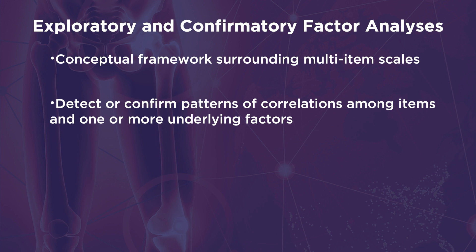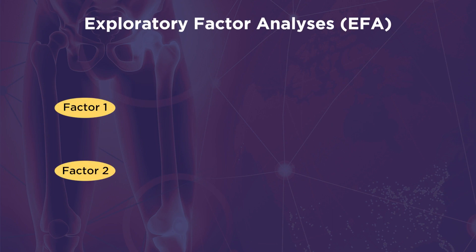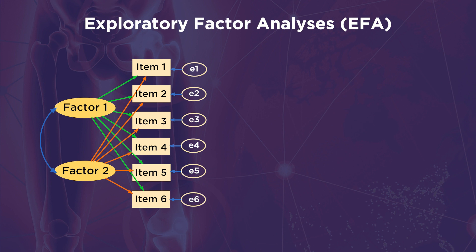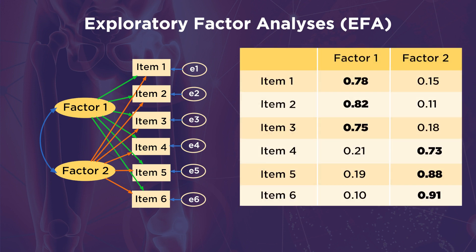The conceptual framework surrounding multi-item scales is investigated by factor analysis. Factor analysis detects or confirms patterns of correlations among items and one or more underlying factors. A factor is a latent or unobserved variable. The term factor is used interchangeably with domain, construct, or concept. The factor is measured with observed variables such as questionnaire items. We conduct exploratory factor analysis, or EFA, when we don't have a prior theory about which items measure which factors, except the number of factors. In EFA, the factor loadings are freely estimated between all factors and items. In the table, we can see that item 1, item 2, and item 3 are mostly measuring factor 1, whereas item 4, item 5, and item 6 are mostly measuring factor 2. Based on the item-factor relationships, we characterize the factors that are responsible for the covariation in the data.